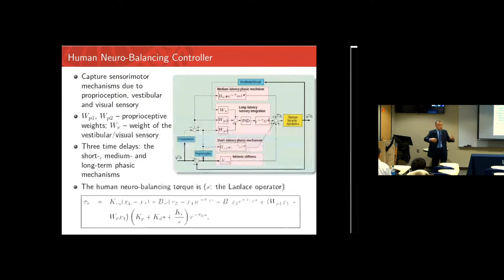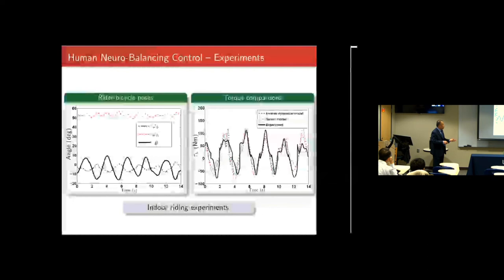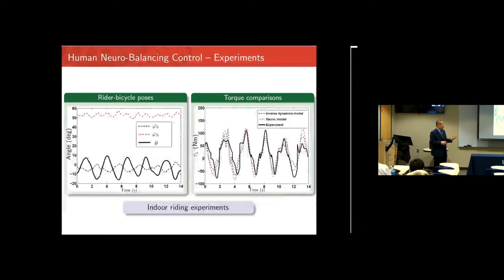For model validation, we compute the torque three ways: by inverse dynamics from Lagrangian equations, by the neural model from the previous slide, and experimentally using a torque sensor underneath the seat. These three are surprisingly consistent, using parameters from the human standing model without further tuning.